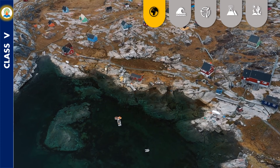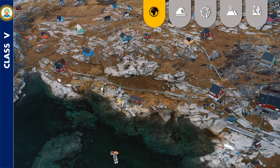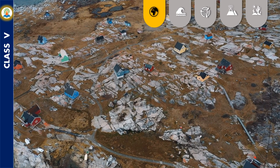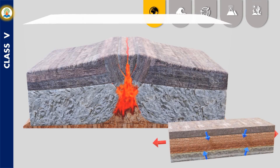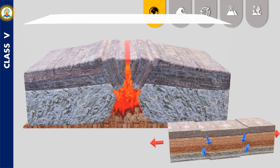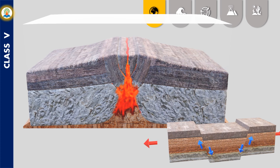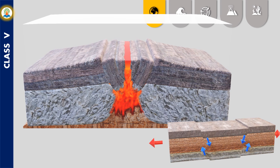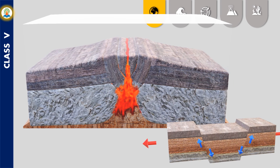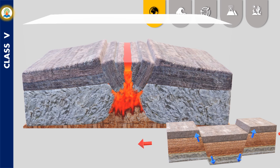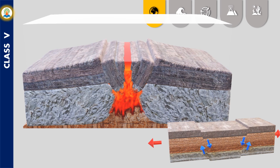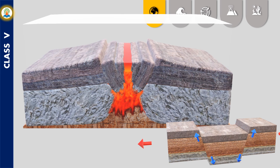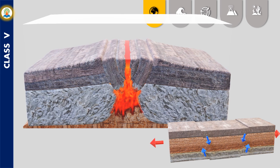An earthquake is defined as the sudden shaking of the surface of the earth due to violent movements or vibrations inside the earth. The earth's crust is made up of different plates. The layers of the earth under the plates are hot and in a molten state because the core below is extremely hot. These layers under the plates are constantly moving; usually such movements cause the plates to slide smoothly against each other. However, at times the movements between the plates can be sudden, giving rise to earthquakes.